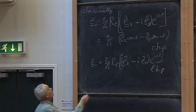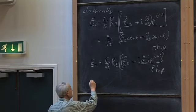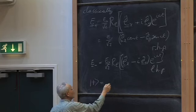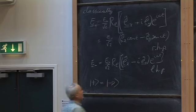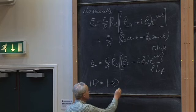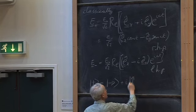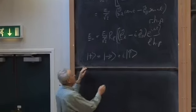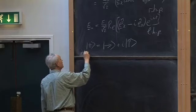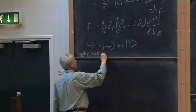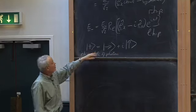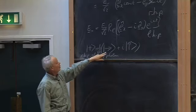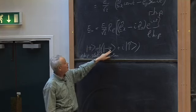How do we treat this quantum mechanically? We say there is a state |+⟩ = (1/√2)(|x⟩ + i|y⟩), where |x⟩ is the state with its electric vector in the x direction — which gets through the polaroid — and |y⟩ is the state with electric vector in y. This would be the right-hand polarized state of our photon — a linear combination of two plane-polarized states.